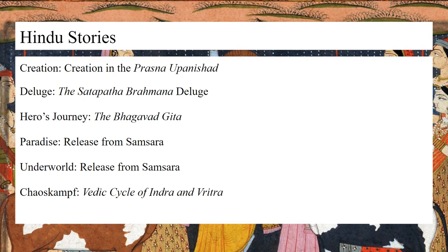Next up is Hinduism. The creation I'm looking at is from the Prasna Upanishad, though there are other creation stories in Hinduism. This details creation through a discussion between two sages. The master sage explains to his pupil that the creator longed for the joy of creating, and through meditation the beings Rayi — which means matter — and Prana — which means life — came into existence, and all things sprang from them.